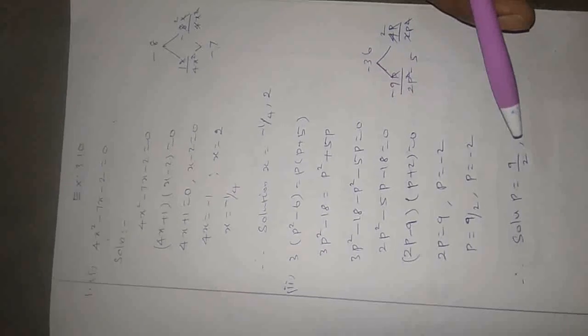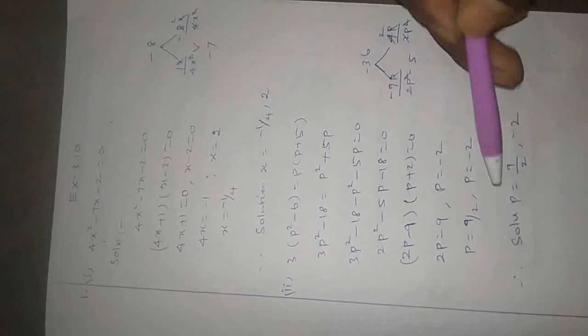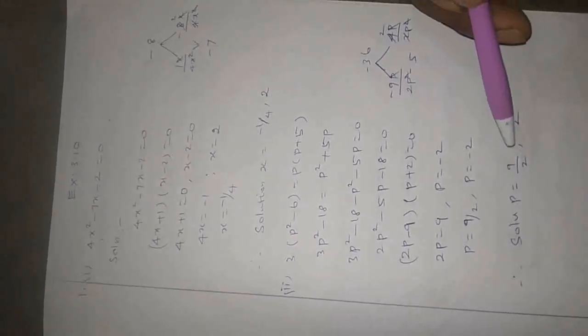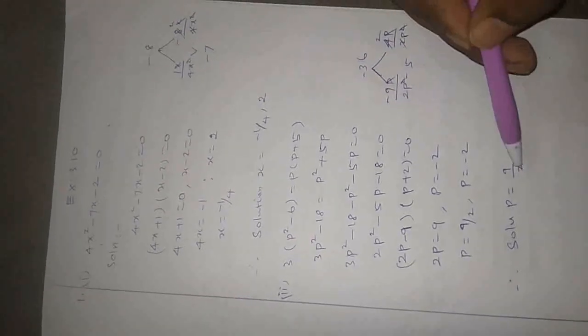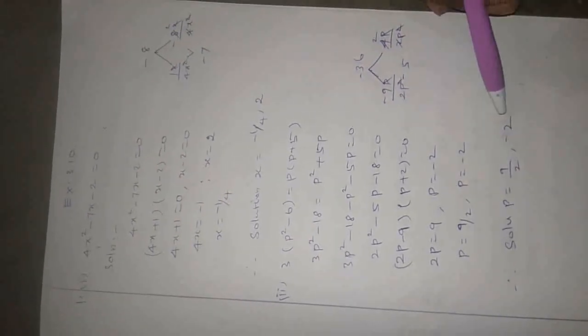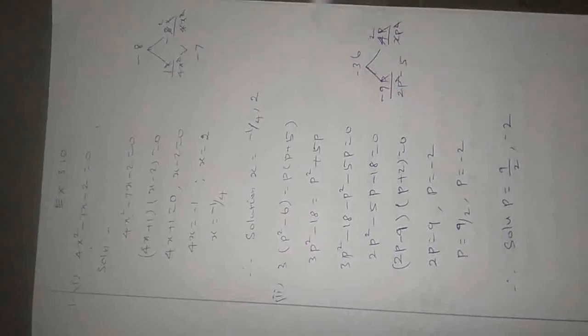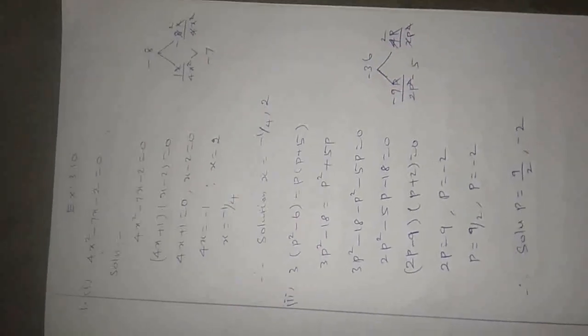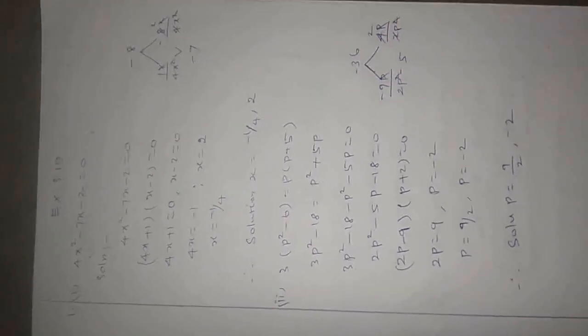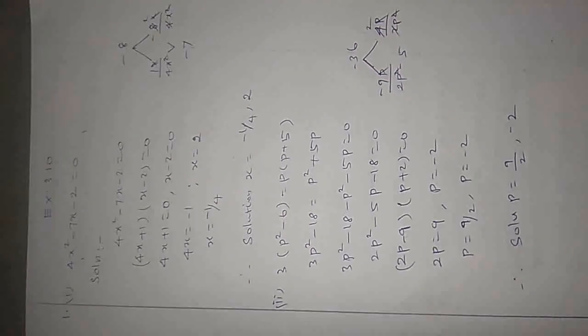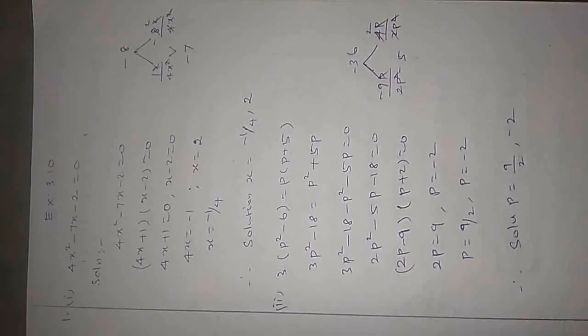Therefore, the solution of p is equal to 9 by 2 comma minus 2. Thank you.